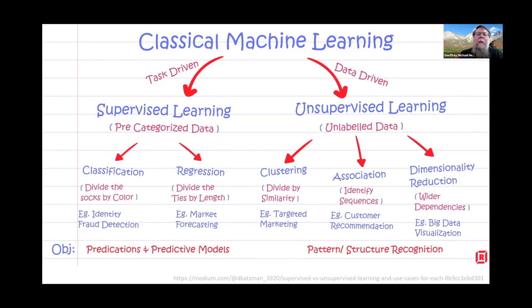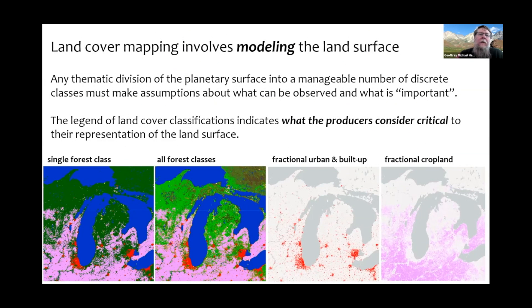So we have classification on one side and clustering on the other, with the additional step of associating clusters with land cover categories. Any thematic division of the planetary surface into a manageable number of discrete classes has to make assumptions about what can be observed and what is important. The legend of each land cover classification really indicates what the producers consider critical to their representation of the land surface, and that